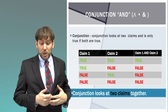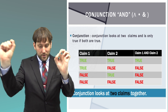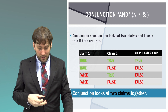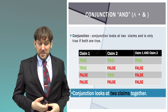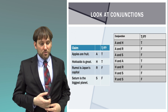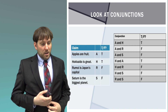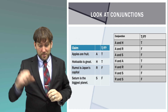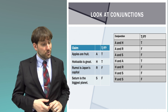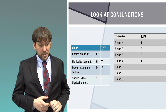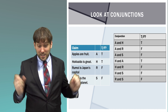Conjunction means and. Conjunction looks at two claims together. If both claims are true, then the combined thing is true. If either claim is false, then the combined thing is false. So, Hokkaido is great and apples are fruit — true. Rumoi is Japan's capital and apples are fruit — false, because Rumoi is not Japan's capital. Hokkaido is great and apples are fruit — true. Hokkaido is great and Rumoi is Japan's capital — false. Hokkaido is great and Saturn is the biggest planet — false. Rumoi is Japan's capital and anything else — false, so that's false.